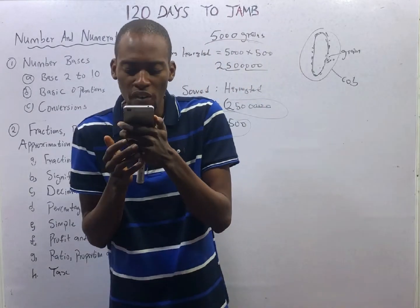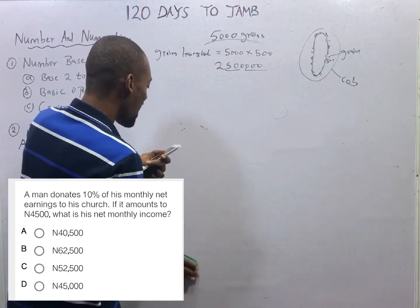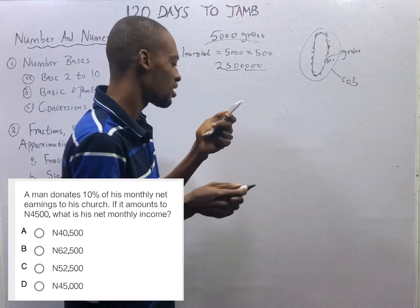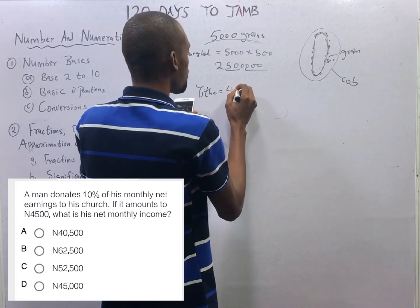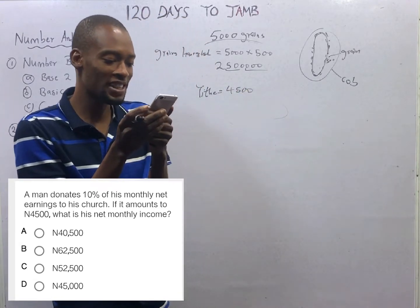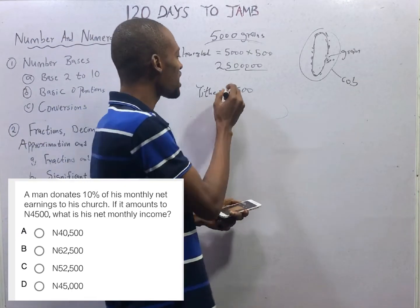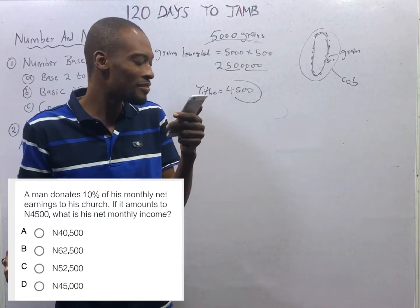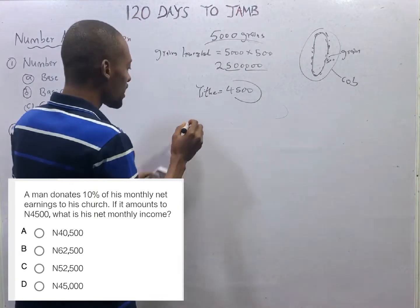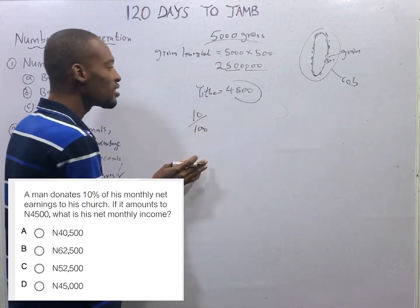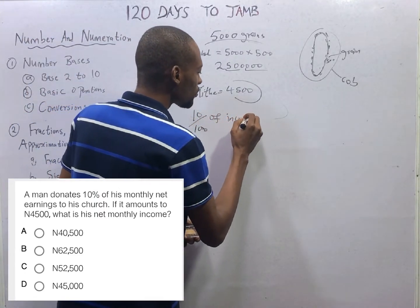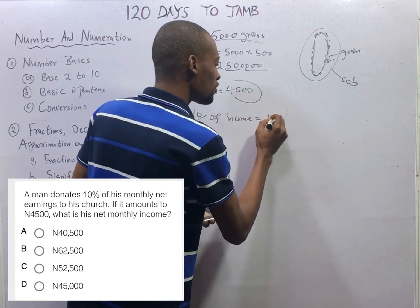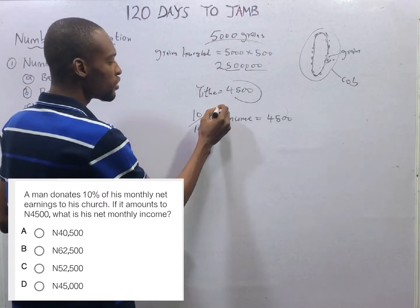Next question: a man donates 10% of his monthly net income to his church — meaning he pays tithe. If it amounts to 4,500 Naira, what is his income? His tithe equals 4,500 Naira. So 10% of his income is 4,500 Naira, which means his income is simply 4,500 Naira times 10.